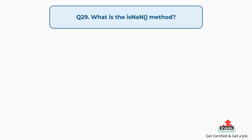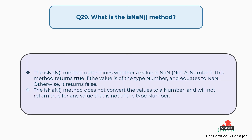Question number twenty-nine: what is the isNaN method? The isNaN method determines whether a value is NaN (not a number). This method returns true if the value is of the type number and equates to NaN; otherwise it returns false. The isNaN method does not convert the values to a number, and will not return true for any value that is not of the type number.